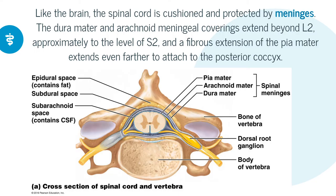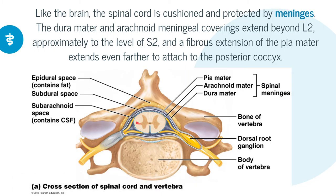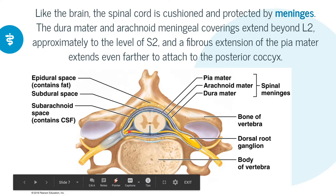Like the brain, the spinal cord is cushioned and protected by meninges. The dura mater and arachnoid meningeal coverings extend beyond L2, approximately to the level of S2, all the way down into the sacrum, and a fibrous extension of the pia mater extends even farther to attach to the posterior coccyx. Looking at a cross section of a vertebra: the spinal cord is in the middle. The layer immediately touching it is the pia mater — it looks blue — then the white layer is the arachnoid mater with little threads coming off of it where cerebrospinal fluid would be, and then the outer thicker layer is the dura mater.